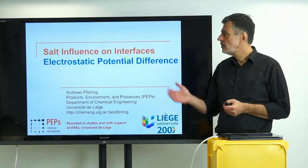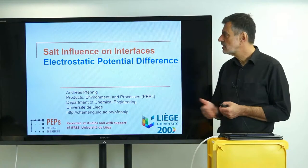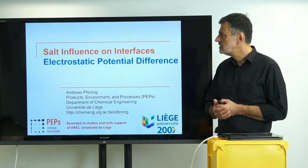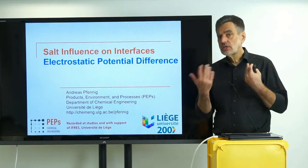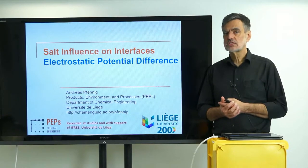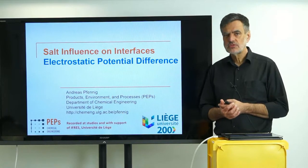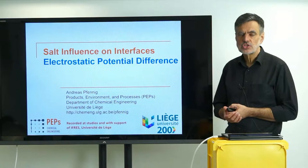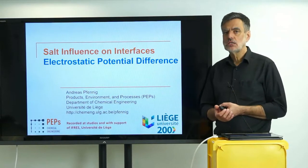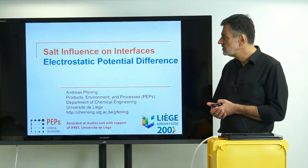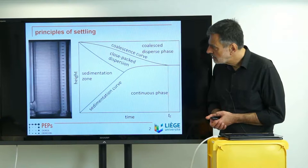Welcome to this video on the salt influence on interfaces. In this first video of this series I would like to show you something about the electrostatic potential difference, where it's coming from mainly, and then in the following videos we will discuss the consequences of that. I would like to start out with a short motivation that relates to phase separation, which is quite frequent unit operation in chemical engineering. The next slide shows in principle how that can be characterized.